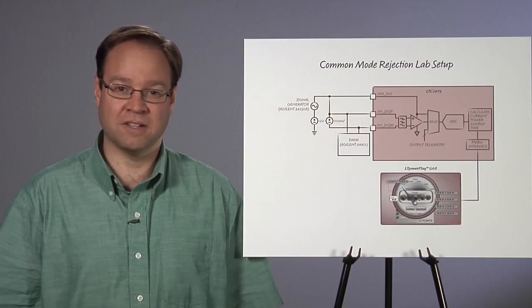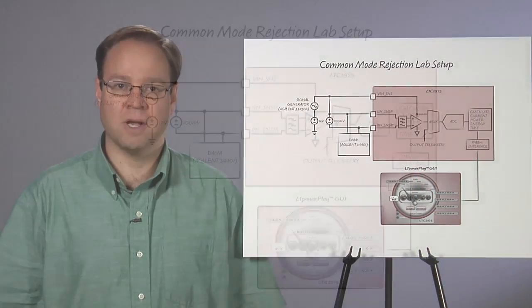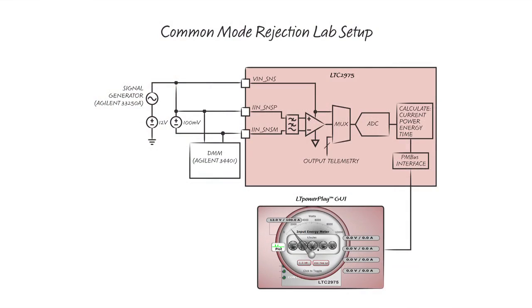We can test the LTC2975's new input current sense feature by applying a 100 millivolt DC input to the current sense amplifier while injecting a 6-volt peak-to-peak, 50 MHz, wideband, Gaussian-distributed common mode disturbance with the Agilent 33250A signal generator noise feature.